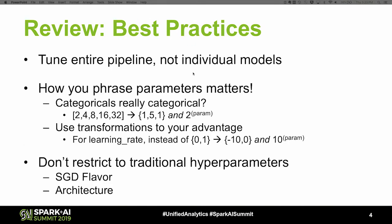Some best practices: tune entire pipelines, not individual models. If you have a support vector machine doing featurization before it goes into a gradient boosted method or deep learning model, tune the kernel and C simultaneously with that second model. Tune all parameters of that ensemble simultaneously, not one model at a time. At the end of the day, you don't really care about the performance of any one of those models — you care about the performance of the entire ensemble. Use transformations to your advantage.